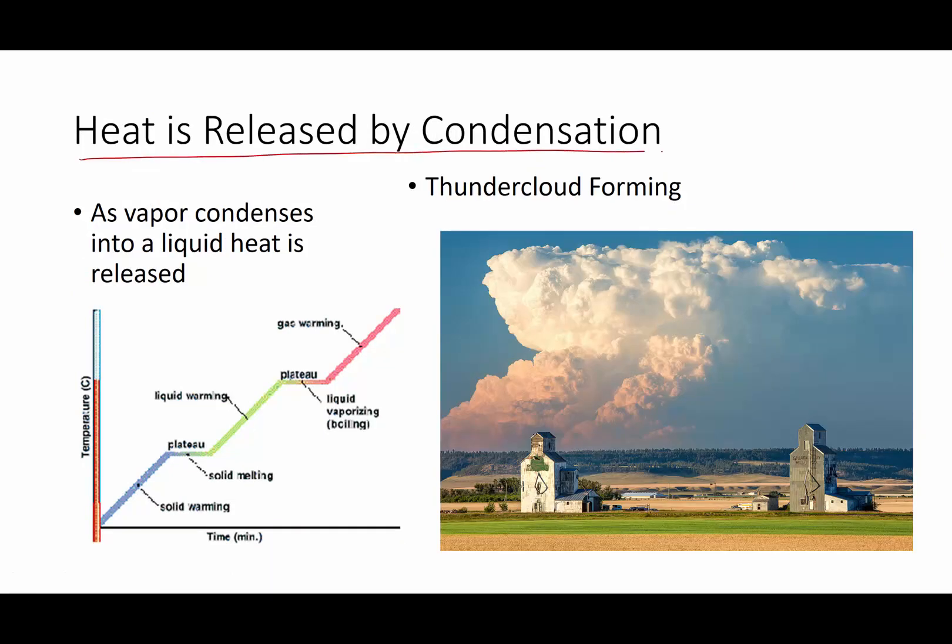Heat is also released by condensation. So let's say I've got gas and I'm going down to a liquid. We're taking the same portion of the graph, but we're going in the opposite direction. If I have gas molecules and I'm going back down to a liquid, heat has to actually go in the opposite direction. And heat is actually going to be released in this situation. What I'm talking about is most of us on a beautiful summer day have laid out and watched a thundercloud build. And I want to explain how that building process occurs. But before we do that, I want you to do me a favor.